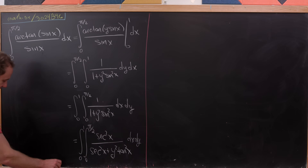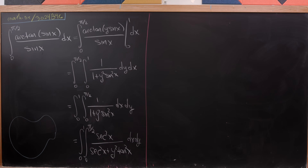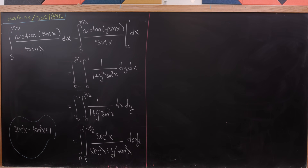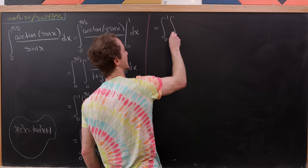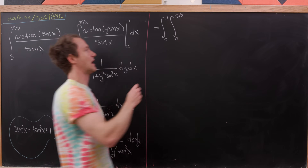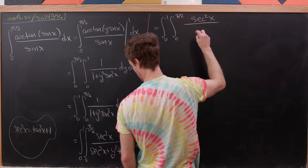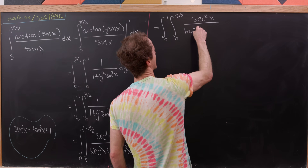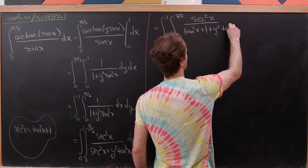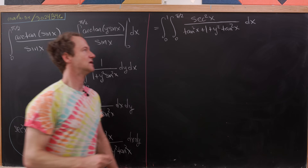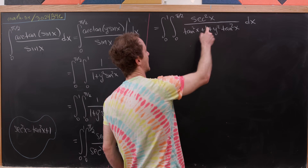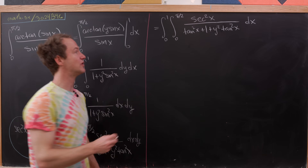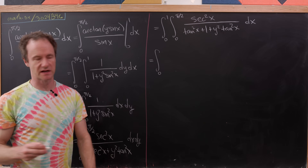Now recall something pretty clear: sec²x equals tan²x + 1. Let's insert that into our integral. We still have the same outer integrals and bounds. In the numerator we have sec²x, and in the denominator we now have tan²x + 1 + y² tan²x. We can combine the tangent squared terms by writing it as 1 + (1 + y²) tan²x.